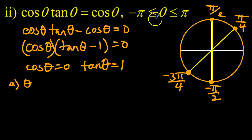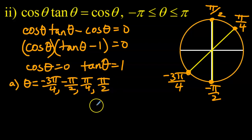So part a, theta on this domain negative pi to pi, theta is equal to, let's go smallest to greatest: negative three pi over four, negative pi over two, pi over four, pi over two.